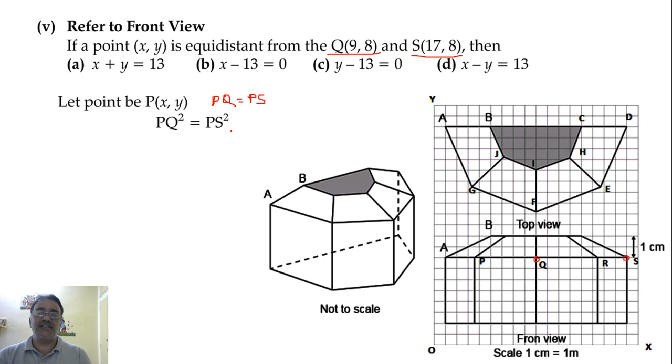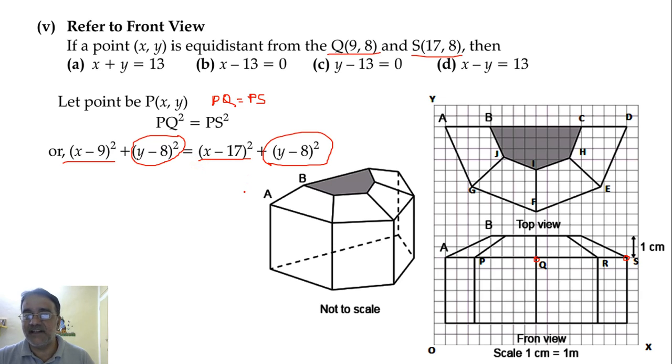So we'll use now the distance formula. That is (x - 9)² + (y - 8)² equals (x - 17)² + (y - 8)². So both sides we have (y - 8)². So we can eliminate these two. So we'll get only (x - 9)² and (x - 17)².